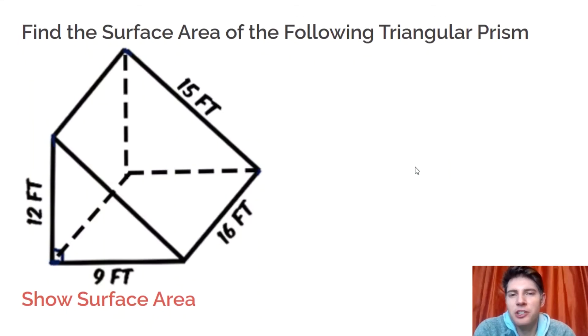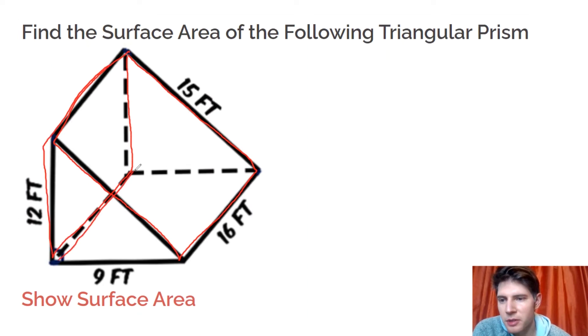Find the surface area of the following triangular prism. The idea is we want to find the area of each face and add them all together. So there's this front face, there's this back face, there's the bottom, and then there's the two triangles. That's really what we want to do is add up all those faces.